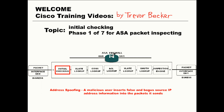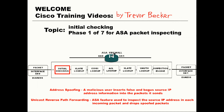The vulnerability that exploits this method is called address spoofing. Address spoofing is when a malicious user inserts false and bogus source IP address information into the packets that it sends. In order to solve for this address spoofing vulnerability,